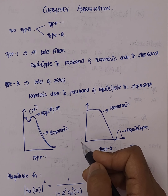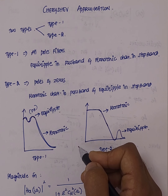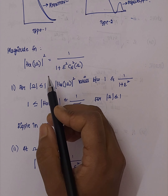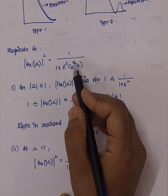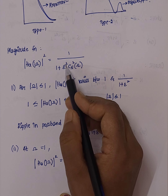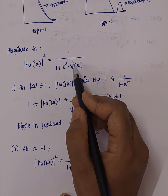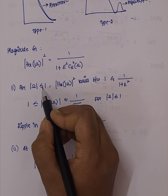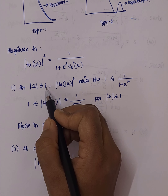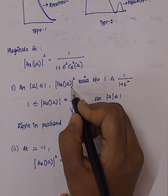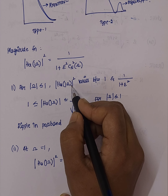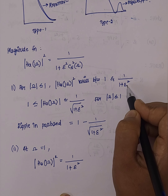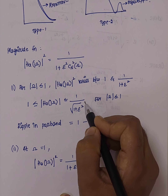We will talk about the magnitude function and parameters. The magnitude square function is equal to 1 divided by 1 plus epsilon squared times C_n squared of omega. When the omega value is less than or equal to 1, the transfer function varies between 1 and 1 divided by 1 plus epsilon squared.